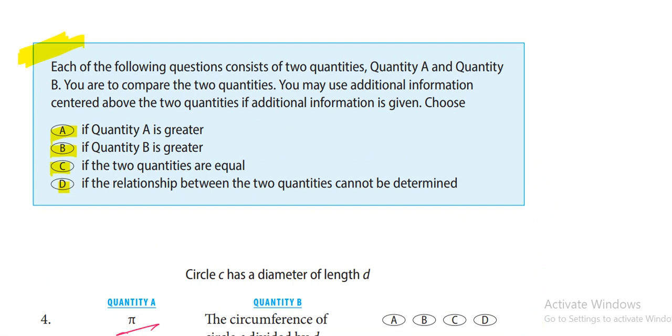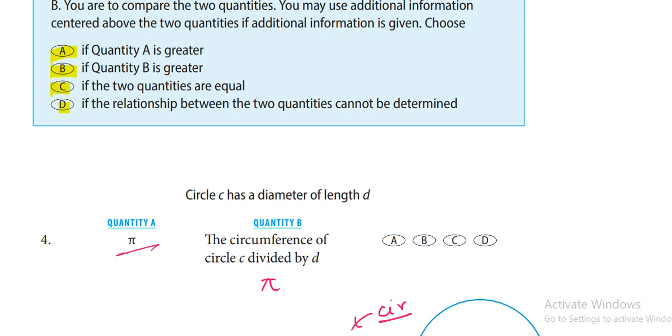That means if the two quantities are equal, the correct answer is option C, the two quantities are equal. For more such tricks, please share this video with your friends and family. To get notifications of all our videos, please subscribe to our channel and click the bell icon. We will meet you in the next session. Thank you.